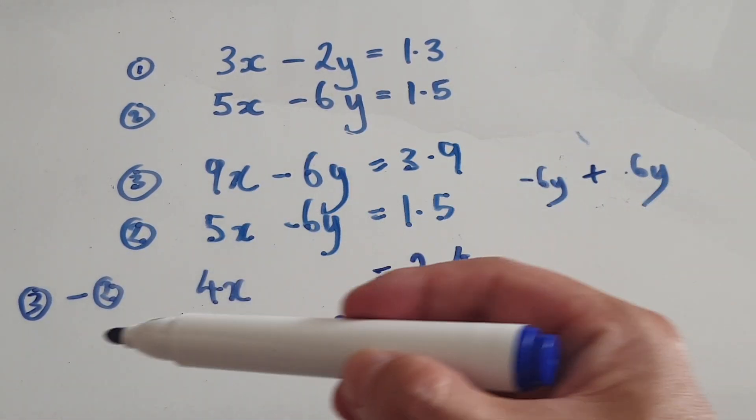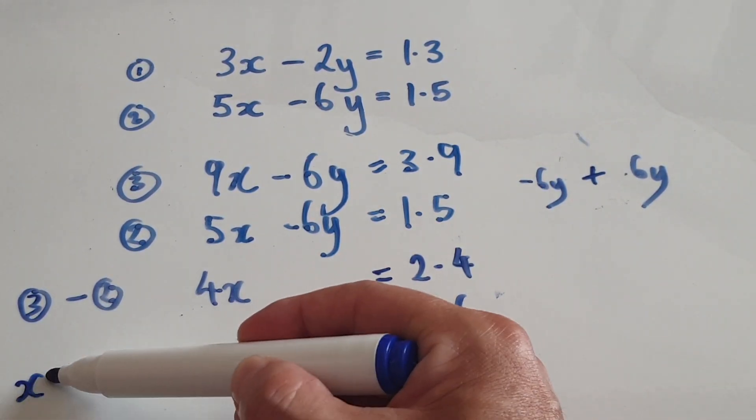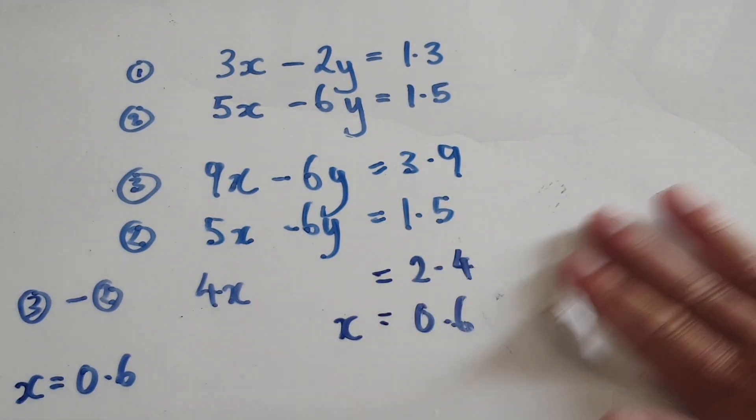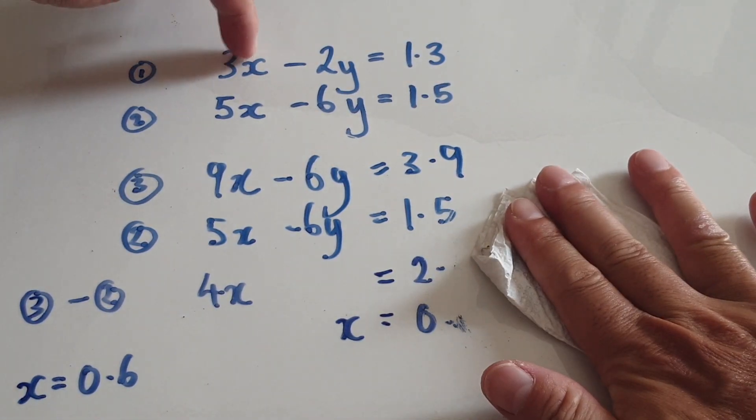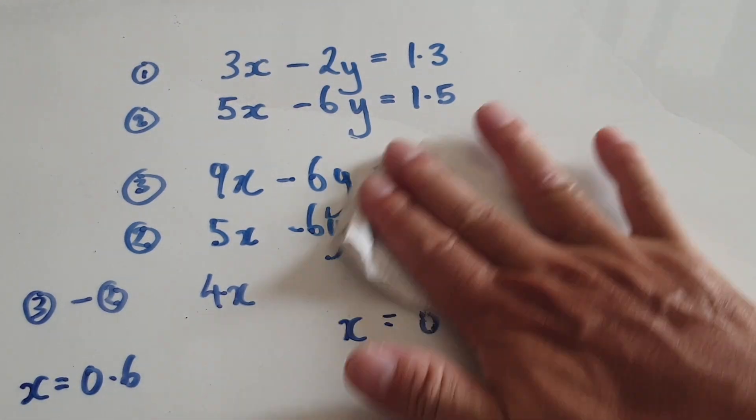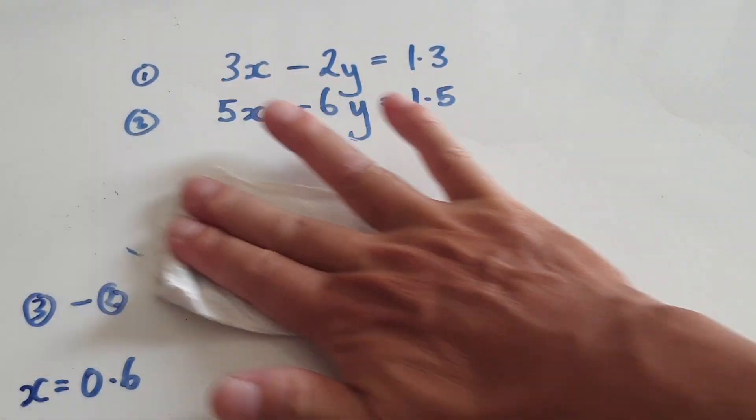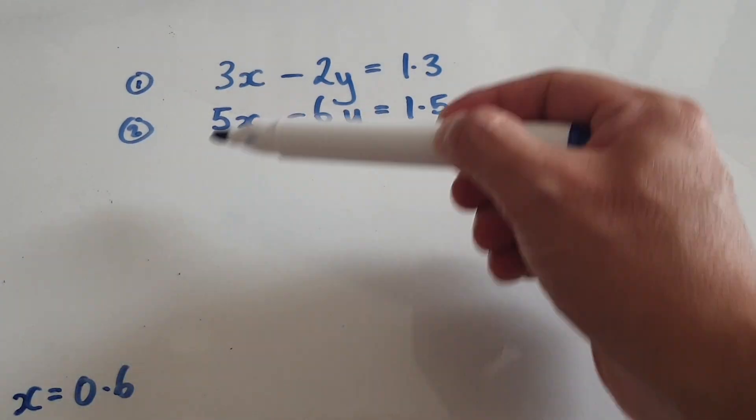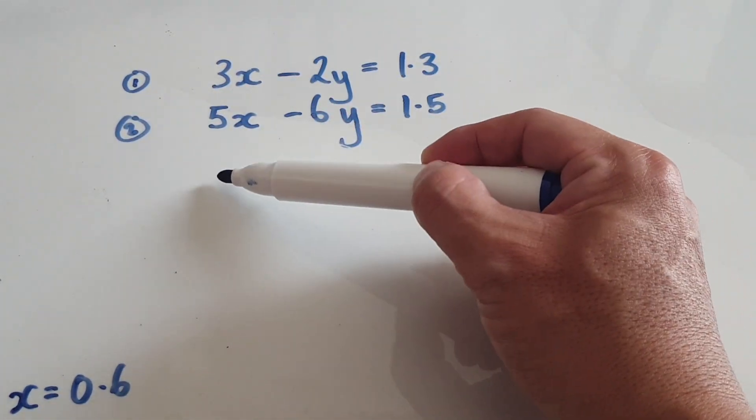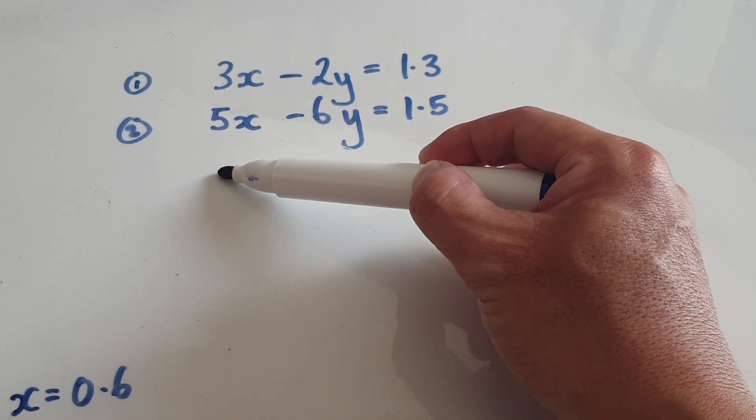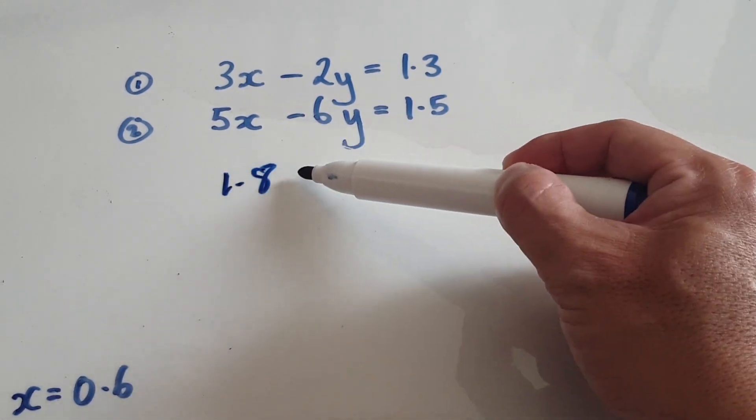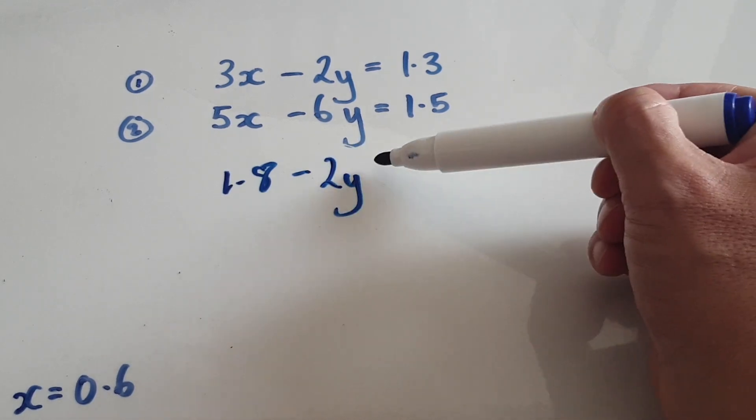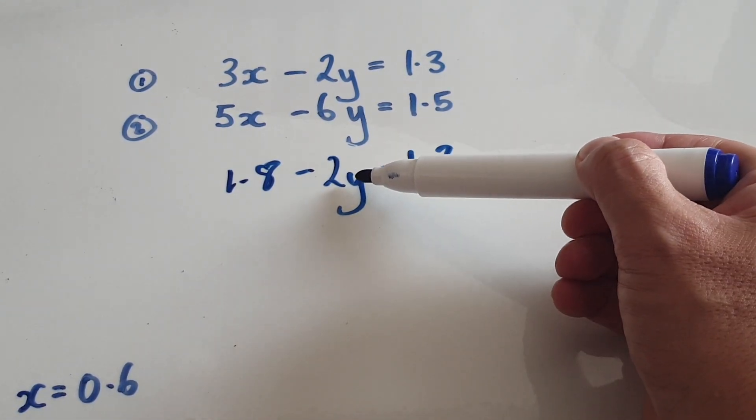So now that we've got x equals 0.6, we can put it into the x here and work backwards to find y. So 3 times 0.6, that would be 1.8, take away 2y equals 1.3. Now just work out y.